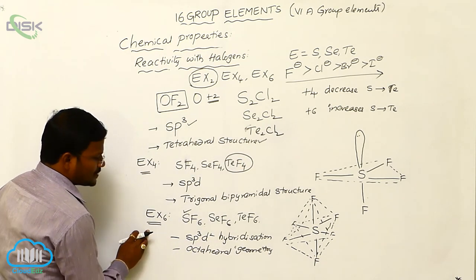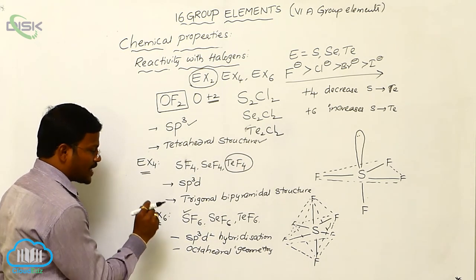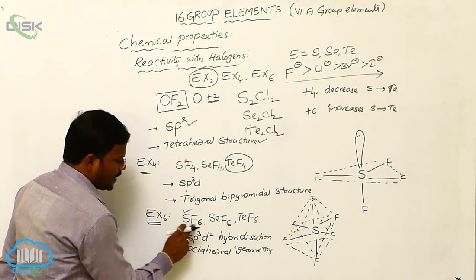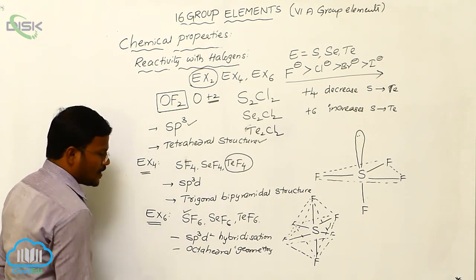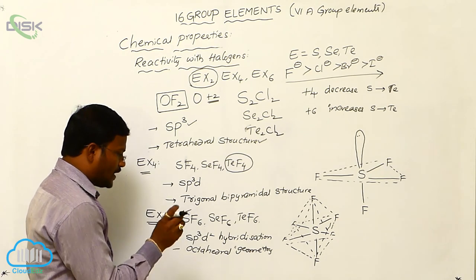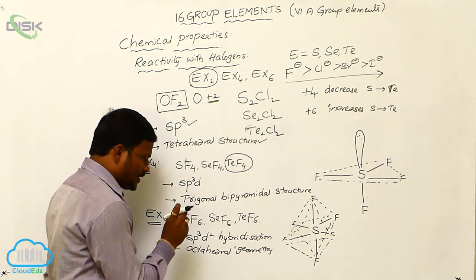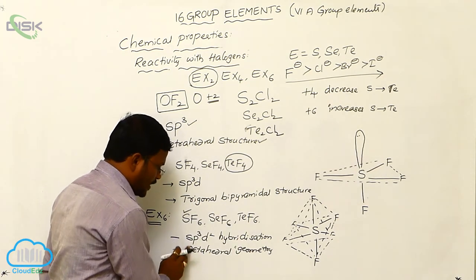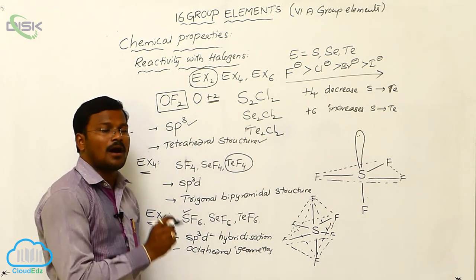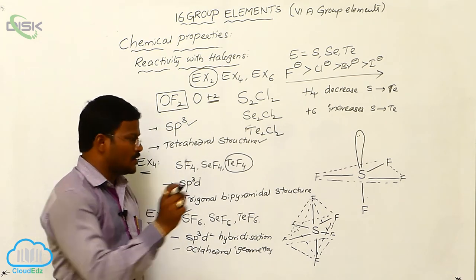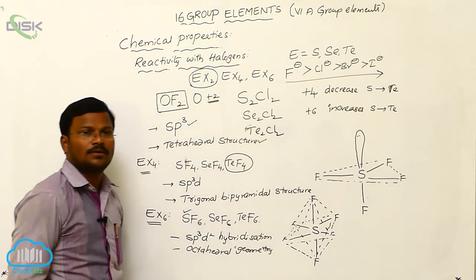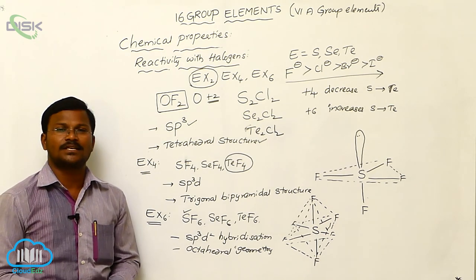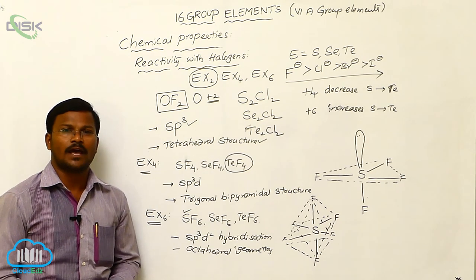In the EX6 category, the most stable chemical substance is sulfur hexafluoride. In sulfur hexafluoride, the sulfur atom exhibits SP3D2 hybridization, and due to SP3D2 hybridization the molecule exists in octahedral geometry. This concludes the discussion of the reactivity of Group 16 elements with halogens.